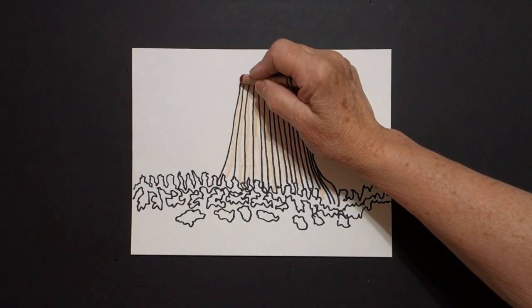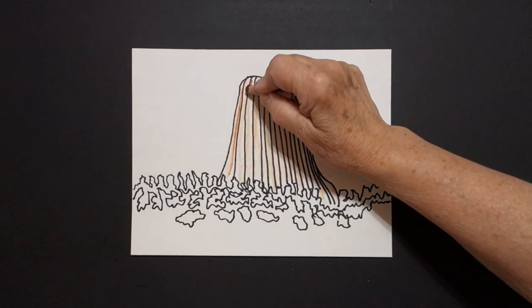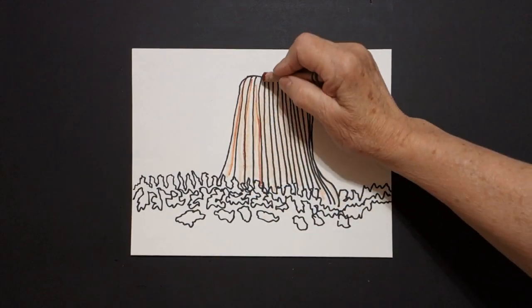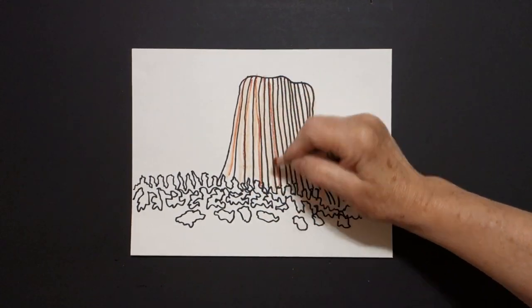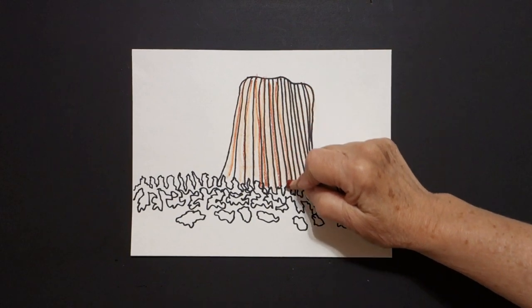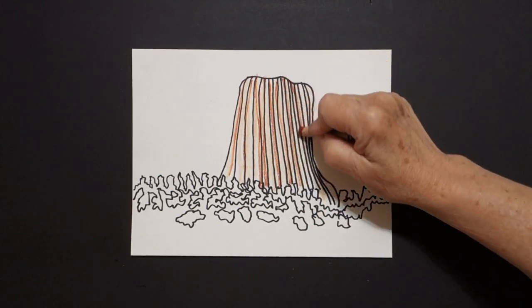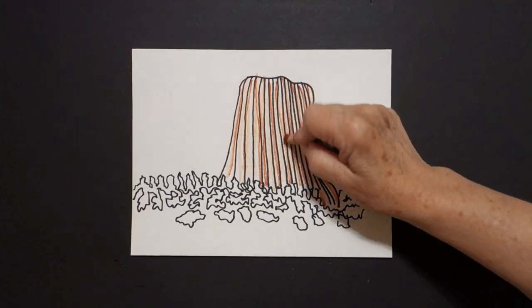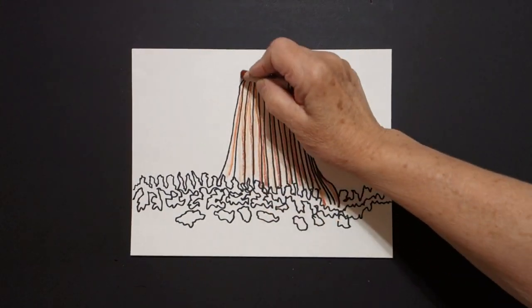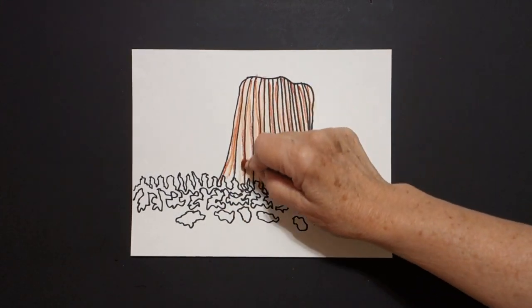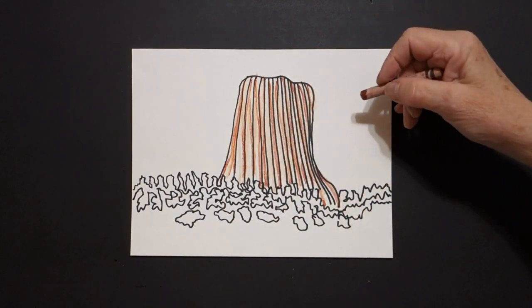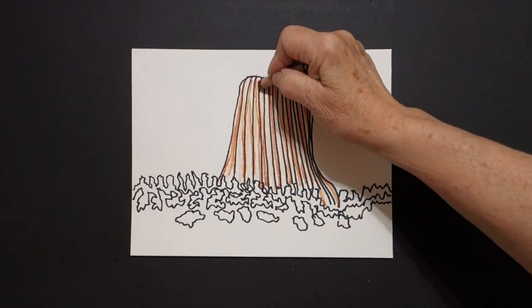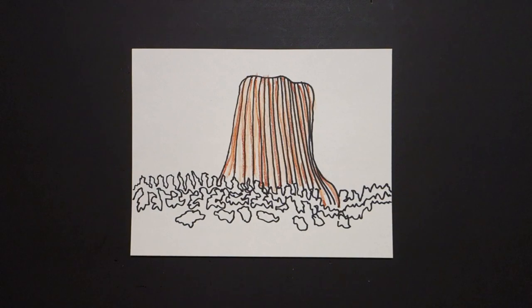Then I come in with another brown and just go over what I just did. Try and stay close to your lines. You don't want to upset that striation look that this rock landform has going on. You can do this with the light brown, and then come back in with the darker brown.